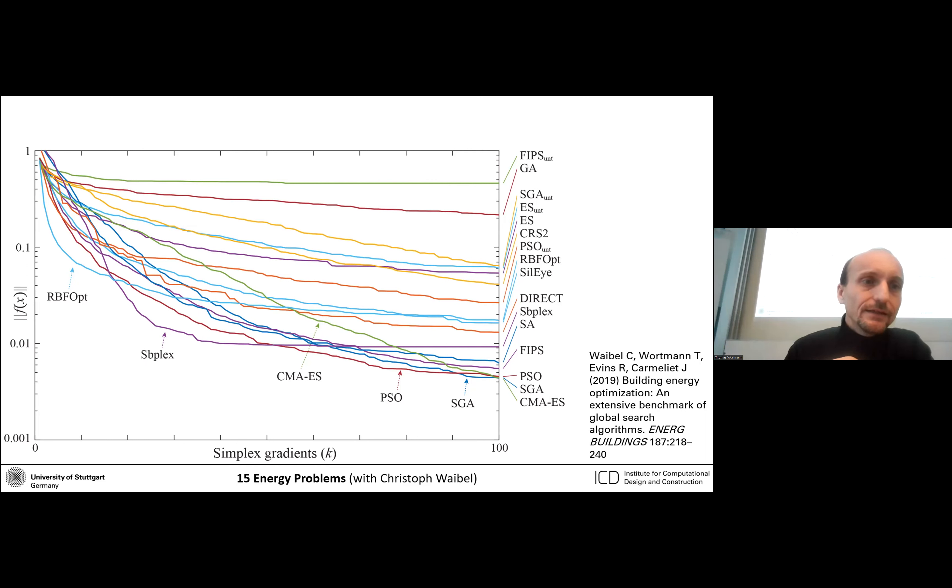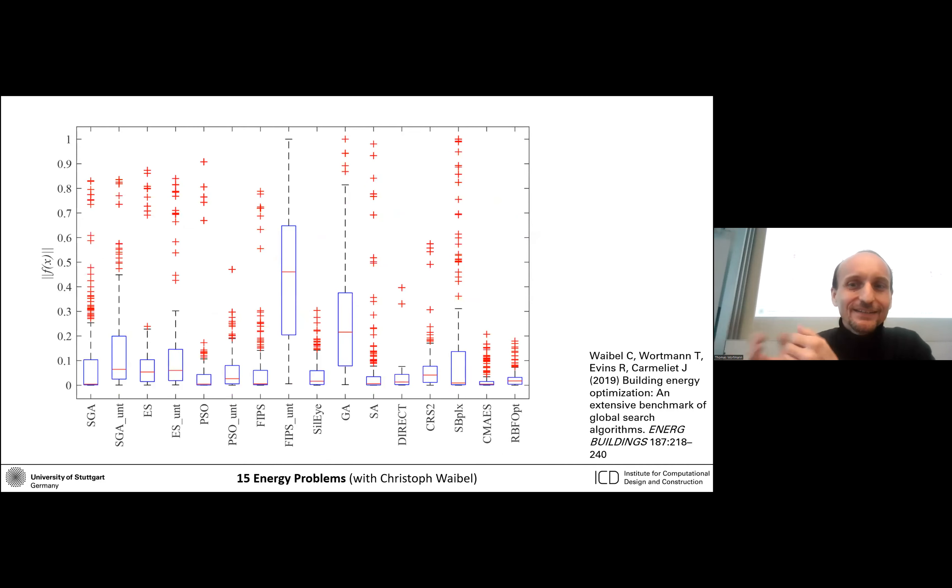You can see there is a whole family of different kinds of algorithms that do well. Here at the very end, actually, even the simple genetic algorithm is basically the best. But actually let's go to, again, the killing argument for me is the robustness. Basically all of these algorithms have a quasi-random performance across what are all building energy optimization problems at the end of the day, even though they're different in terms of the geometry of the buildings and the complexity and so on. So it's very, if you pick any algorithm that is not CMA-ES or RBFOP, then you have almost no guarantee that you will get anything meaningful.